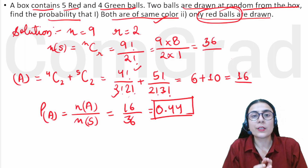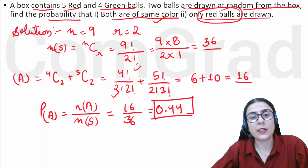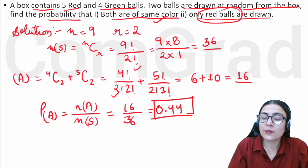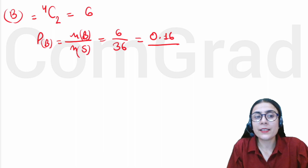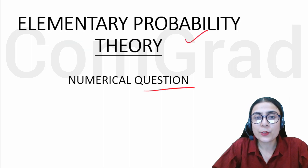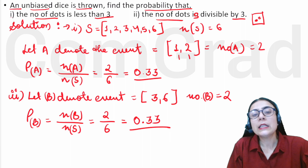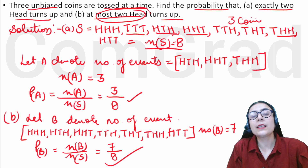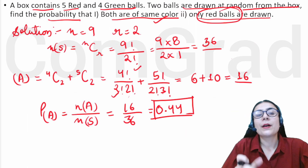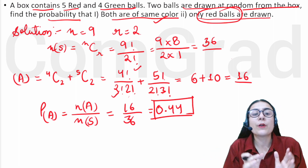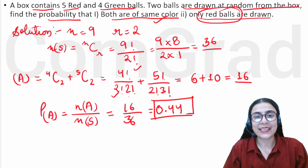In this question, we had two cases: the first said both balls are the same color giving P = 0.44, and the second said only red balls are drawn giving P = 0.16. In this video, we covered probability theory numerical questions — dice-related, coins-related, playing cards-related, and balls-related problems. I hope all points are clear. We will do the next topic in the next video. Goodbye!